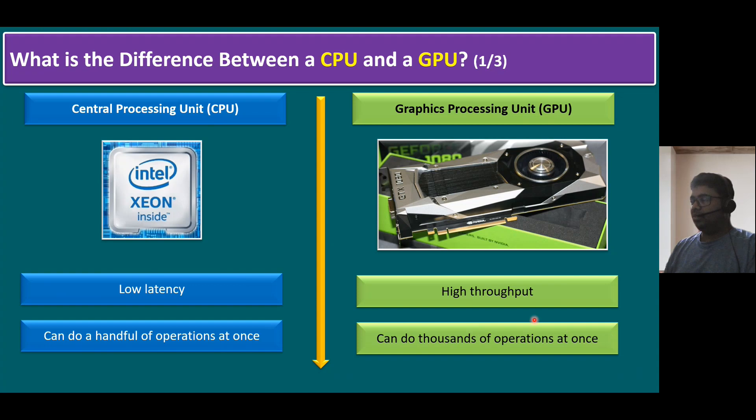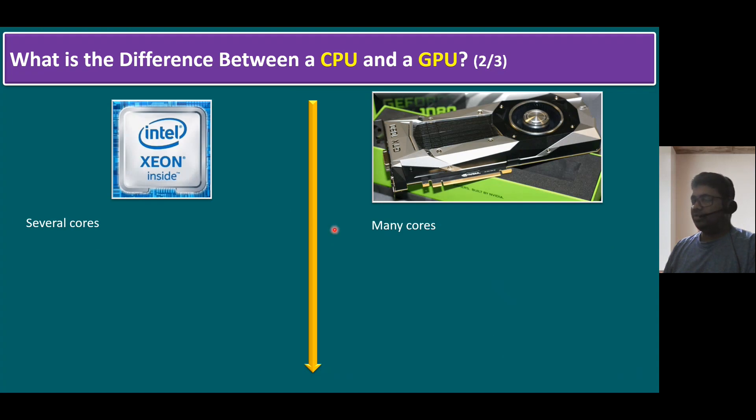How come it's doing thousands of operations at once? The only difference is the CPU comes with several cores, but the GPU comes with many cores. Several cores means in Intel, we have cores like dual-core, quad-core, octa-core, 16-core, 32-core, and so on. Similarly, even in the GPU also, we have a comparative processor to CPU. We have so many cores.